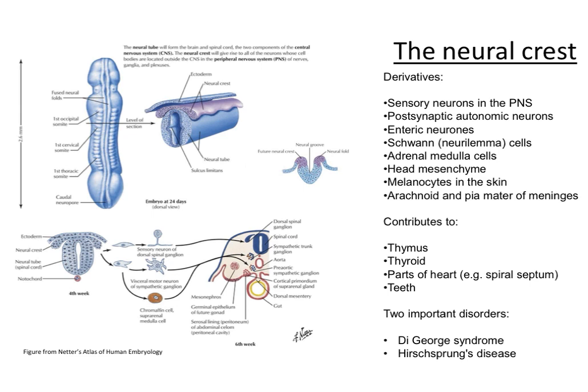These cells are also crucial for the development of the head, and quite commonly in neural crest cell defects there are deformities of the head and facial anatomy. Interestingly, the neural crest cells also become melanocytes within the skin, so albinism does involve neural crest cells as well as the metabolic pathways resulting in the synthesis of melanin.